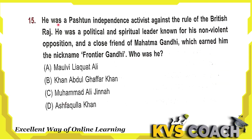Next question: he was a Pashtun independence activist against the rule of British Raj — a political and spiritual leader known for his non-violent opposition and a close friend of Mahatma Gandhi, which earned him the nickname Frontier Gandhi. Who was he? Option A is Maulvi Liyaqat Ali — a freedom fighter and leader of the 1857 fight from Allahabad. Option B is Khan Abdul Ghaffar Khan — he is the Frontier Gandhi. Option C is Muhammad Ali Jinnah — barrister and founder of Pakistan. Option D is Ashfaqullah Khan — a freedom fighter and co-founder of the Hindustan Republican Association. So the right answer is option B, Khan Abdul Ghaffar Khan.